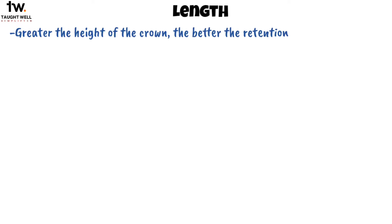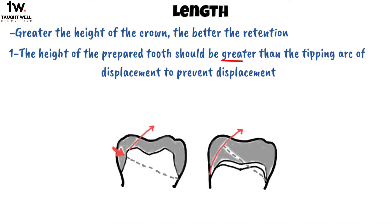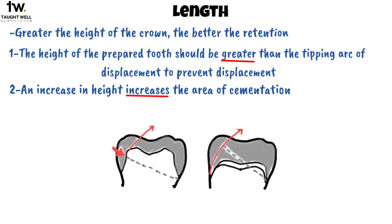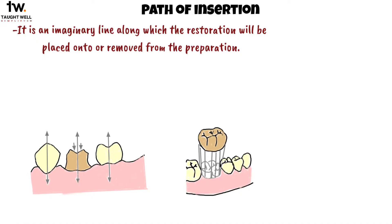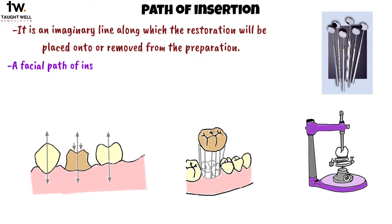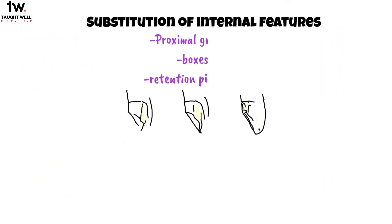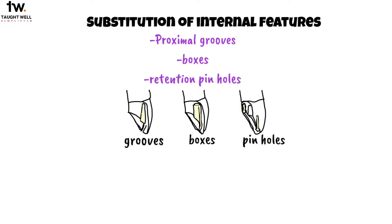Greater the height of the crown, the better the retention. Length of the crown improves retention in two ways: firstly, the height of the prepared tooth should be greater than the tipping arc of displacement to prevent displacement, and secondly, an increase in height increases the area of cementation. The path of insertion is an imaginary line along which the restoration will be placed onto or removed from the tooth preparation. It should be accurately determined using a surveyor, and intraorally, the preparation can be evaluated using a mouth mirror. A facial path of insertion is avoided as it produces a prominent unaesthetic cervical margin, and the mesiodistal inclination should be parallel to the proximal inclinations of adjacent teeth. Substitution of internal features is obtained by proximal grooves, boxes, and retention pinholes that can be incorporated to improve retention.